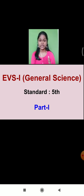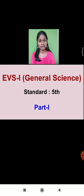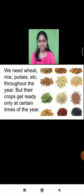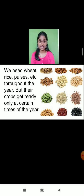If you remember, in food for all, we had already learnt there are certain seasons which exist in India, like Kharif season, Rabi season, and summer season. We had learnt that there are particular crops which can be grown only at certain periods of the year. They cannot be grown the full year, but we need wheat, rice, pulses, etc. throughout the year. This is the basic need of human beings.